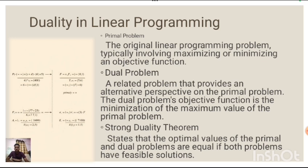Duality in Linear Programming. First, the primal problem is the original linear programming problem, typically involving maximizing or minimizing an objective function. Second, the dual problem is a related problem that provides an alternative perspective on the primal problem. The dual problem's objective function is the minimization of the maximum value of the primal problem. Third, the strong duality theorem states that the optimal values of the primal and dual problems are equal if both problems have feasible solutions.